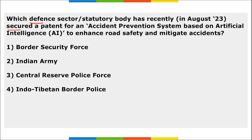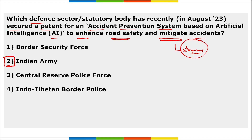Which defense sector recently secured a patent for an accident prevention system based on artificial intelligence to enhance road safety? It is the Indian Army. This system was developed within the Indian Army's research and development division, and Colonel Kuldeep Yadav has been credited with it. This patent is valid for 20 years.